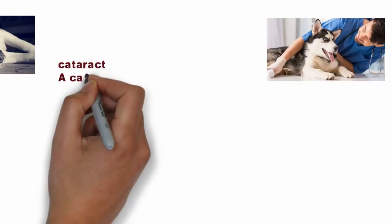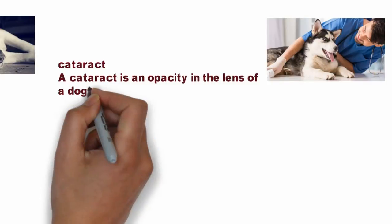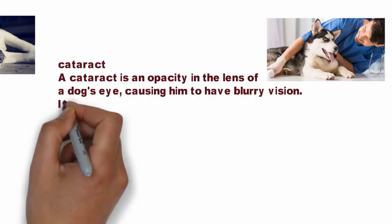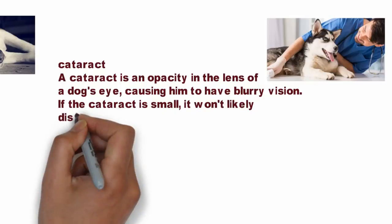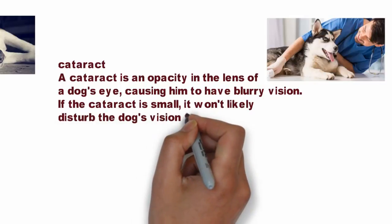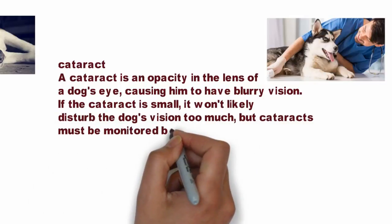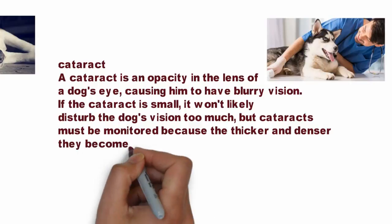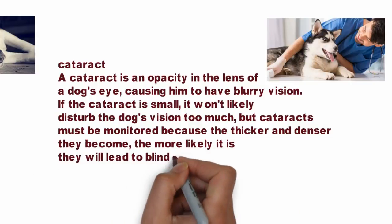10. Cataracts. A cataract is an opacity in the lens of a dog's eye, causing blurry vision. If the cataract is small, it won't likely disturb the dog's vision too much, but cataracts must be monitored because the thicker and denser they become, the more likely they will lead to blindness.